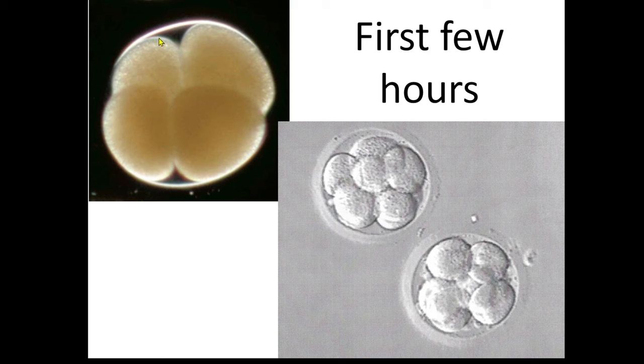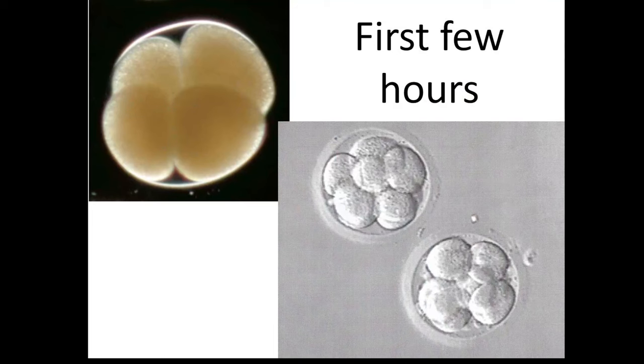Within just a few hours of fertilization occurring, the single cell zygote starts to divide — first into two, then into four, then into larger clusters of cells. This process is called cleavage. If two ova were fertilized, that gives rise to non-identical twins, and if just one zygote physically separates after cleavage, that results in identical or monozygotic twins.